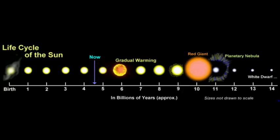The Sun will be fairly stable over the next 5 billion years, at which time it will enter its red giant phase.